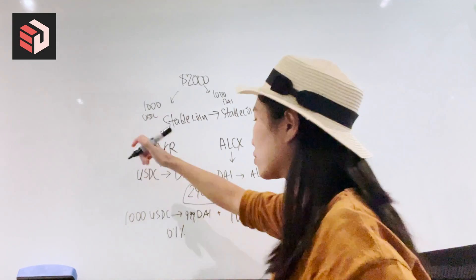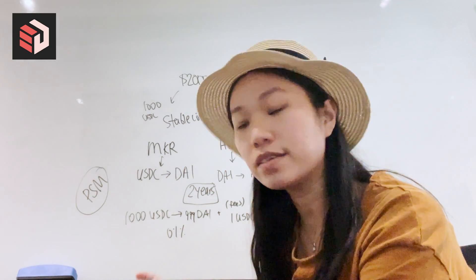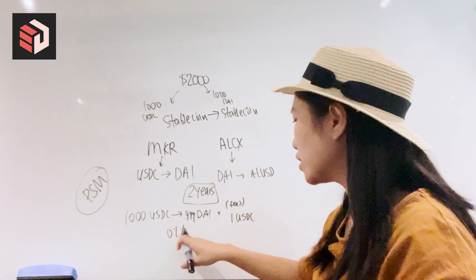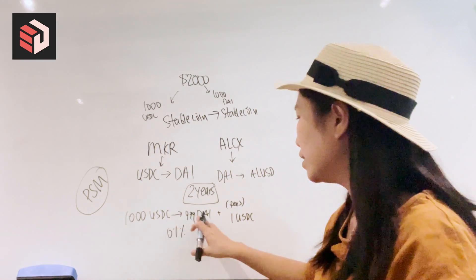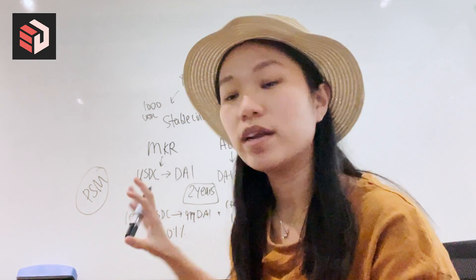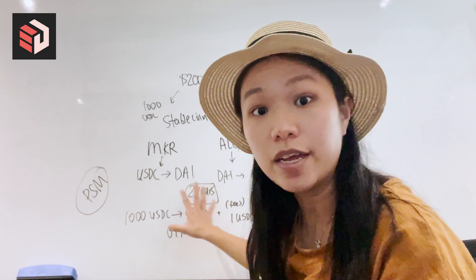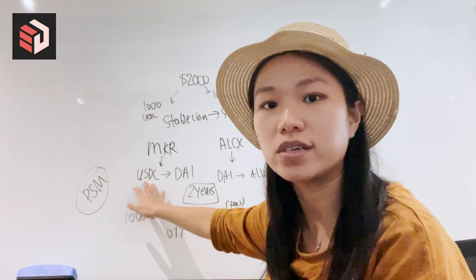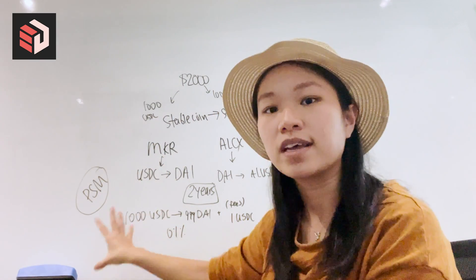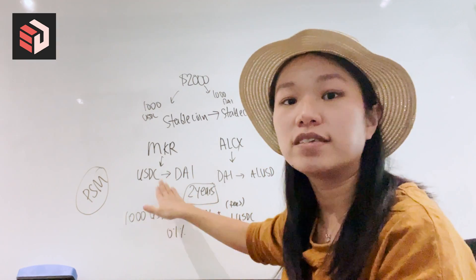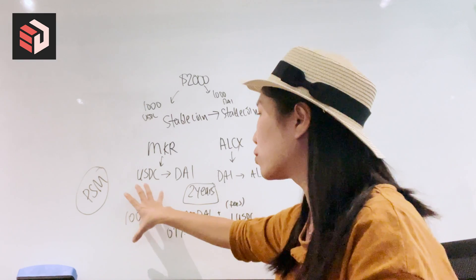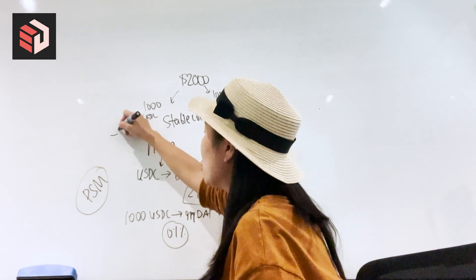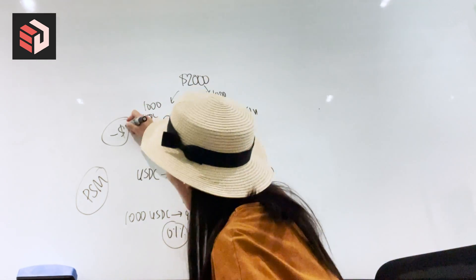This is something Maker created called the PSM — the Peg Stability Mechanism. In this mechanism, users can withdraw the underlying at just a 0.1% fee and 0% stability fee. The entire idea is that when DAI is fluctuating too much, USDC is backing it. There are comments from the community that DAI is not really decentralized — DAI is actually 50% backed by USDC. But the whole idea is to provide stability to DAI just in case prices fluctuate too much. You can always withdraw for the underlying. The fee is 0.1%, so you lose $1 in the Maker system.